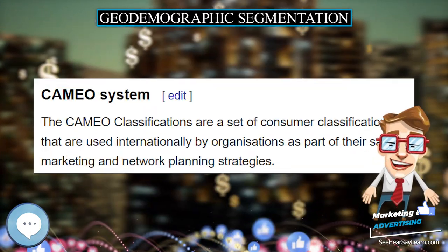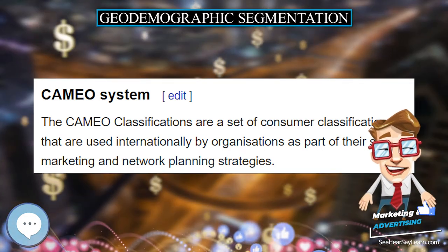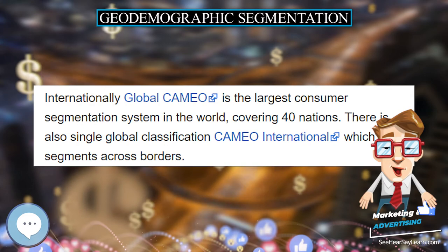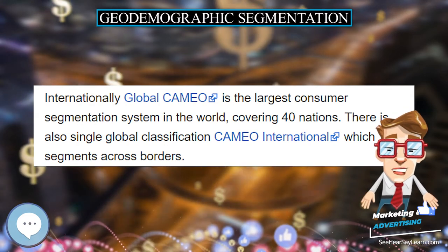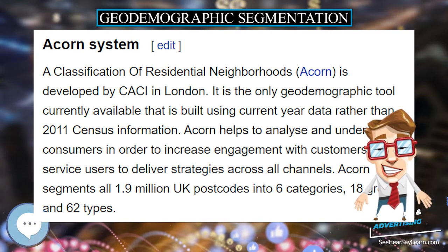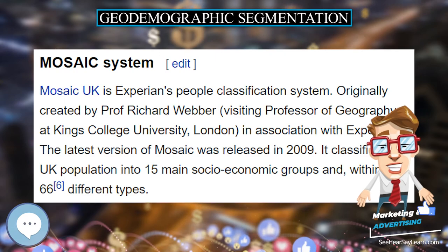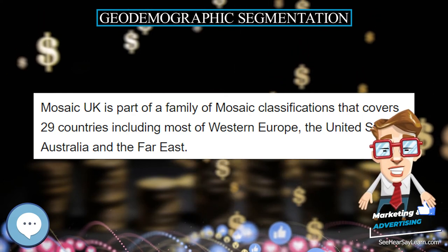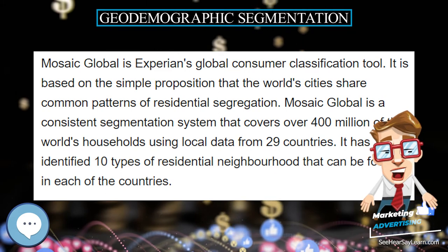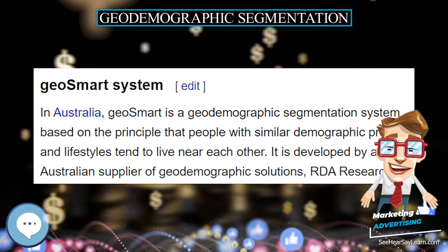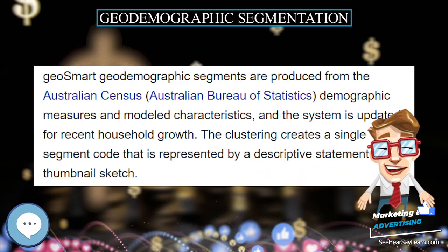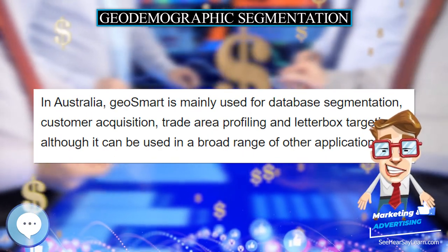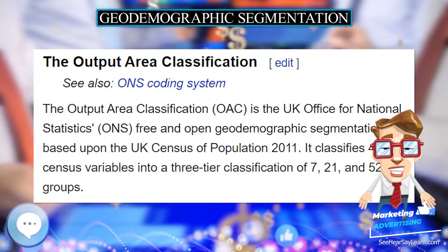GeoSmart System. In Australia, GeoSmart is a geodemographic segmentation system based on the principle that people with similar demographic profiles and lifestyles tend to live near each other. It is developed by Australian geodemographic solutions supplier RDA Research. GeoSmart segments are produced from the Australian Census (Australian Bureau of Statistics) demographic measures and modelled characteristics, and the system is updated for recent household growth. The clustering creates a single segment code represented by a descriptive statement or thumbnail sketch. GeoSmart is mainly used for database segmentation, customer acquisition, trade area profiling, and letterbox targeting.